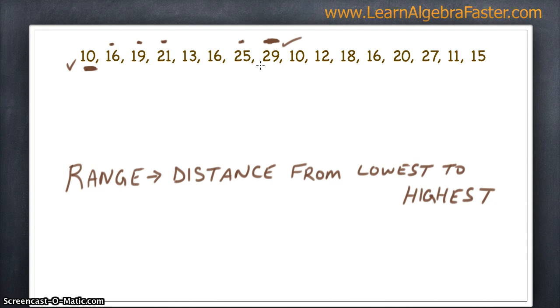So how we actually do this is we take the highest number, which is 29, and we subtract the lowest number, which is 10, and gives us a range of 19. So that's how you can look at a set of numbers, quickly identify the lowest number and the highest number, and find the range.